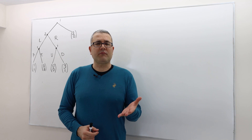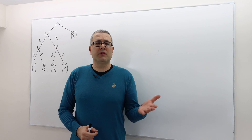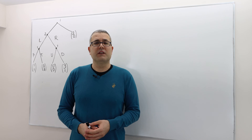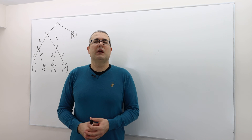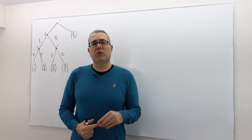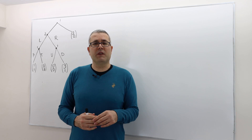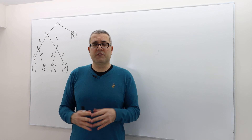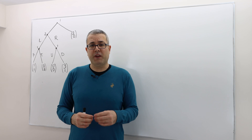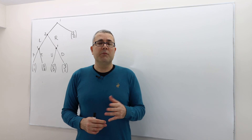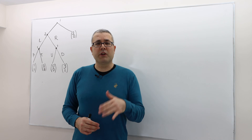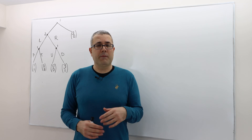Hello everyone. In this episode we'll answer the question: how do we find subgame perfect Nash equilibrium in relatively simpler games? Specifically, what if the game is a finite game with finite horizon, and what if the game has perfect information, meaning everybody can observe all the previous actions perfectly.